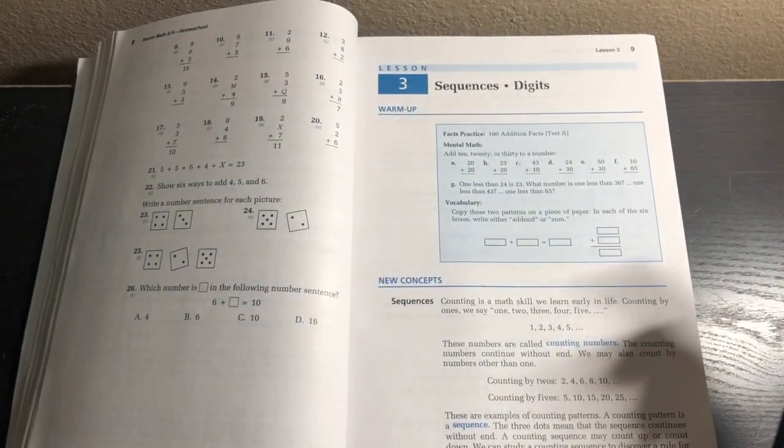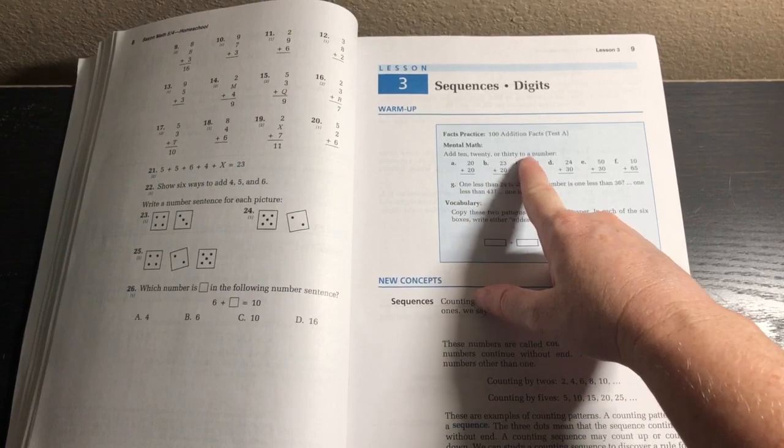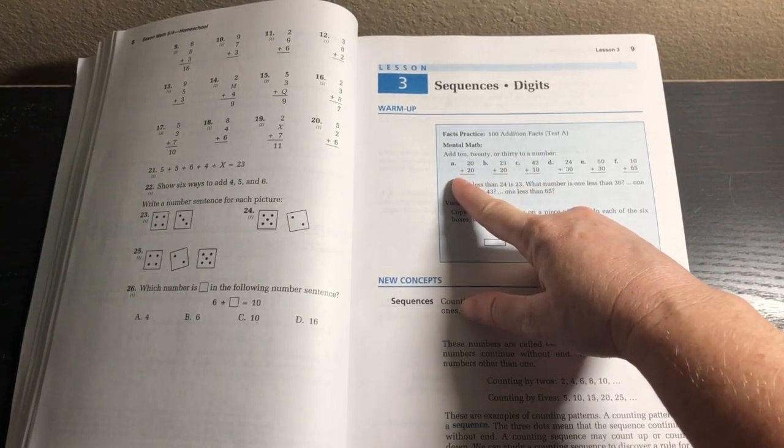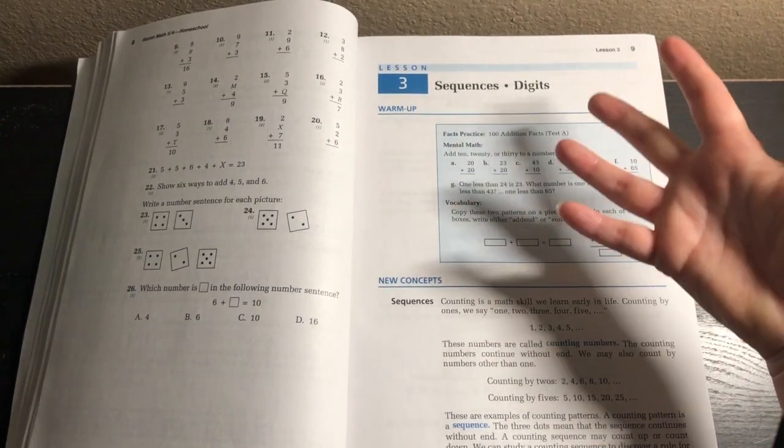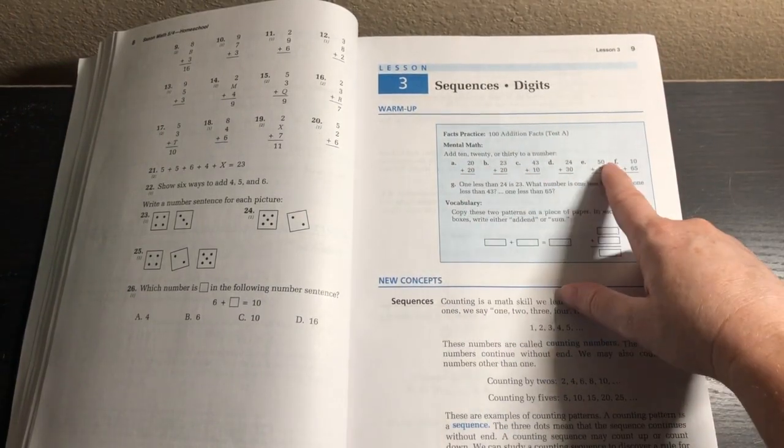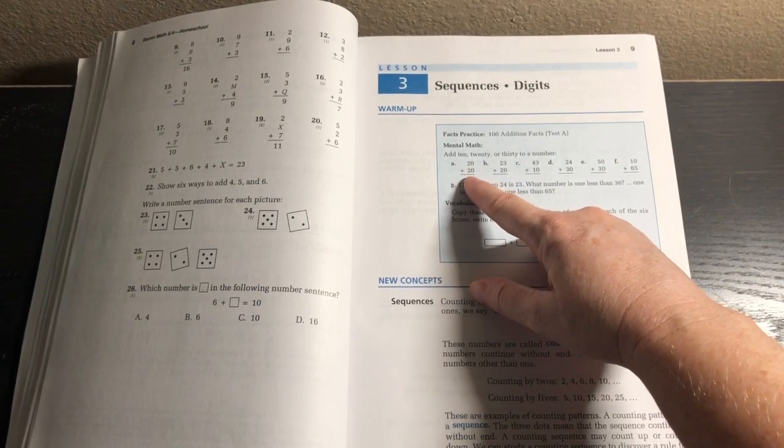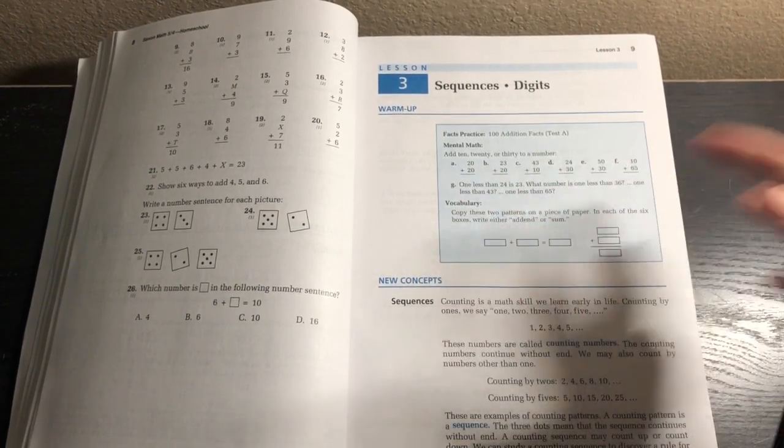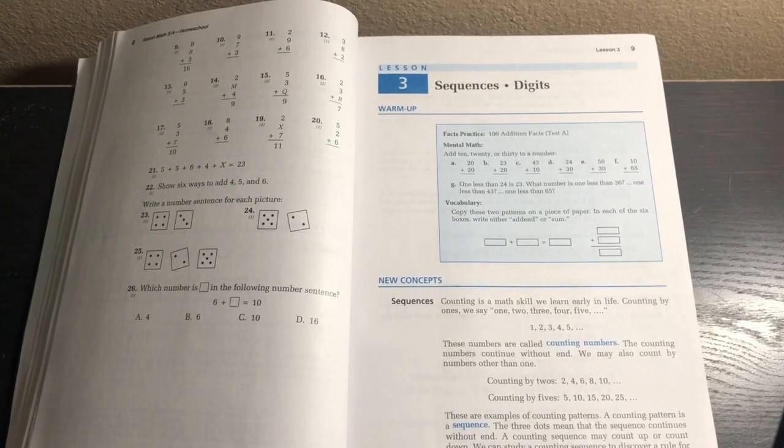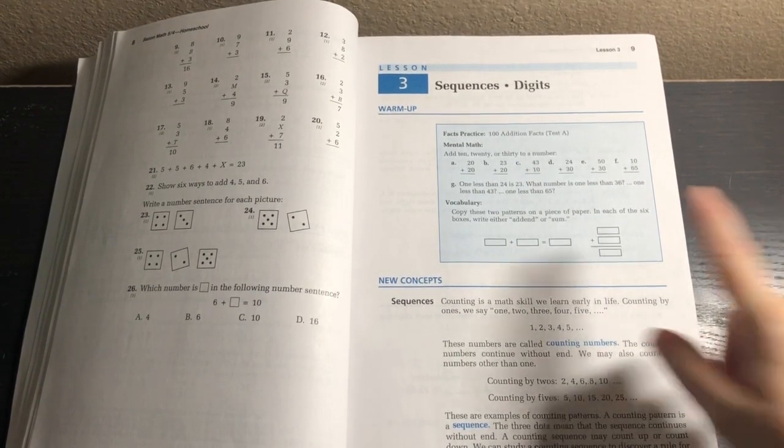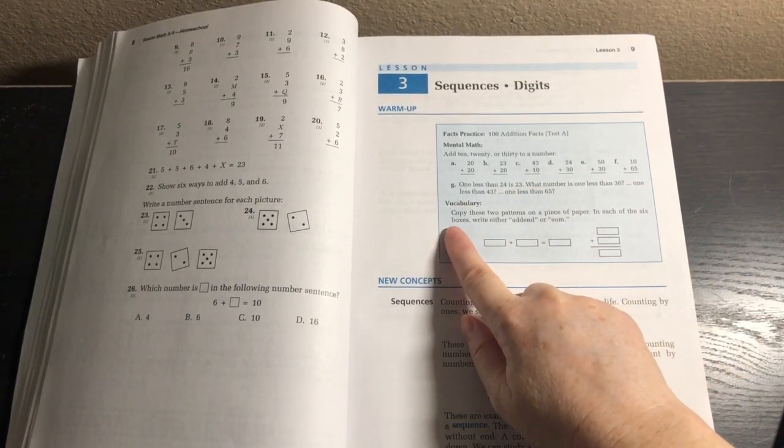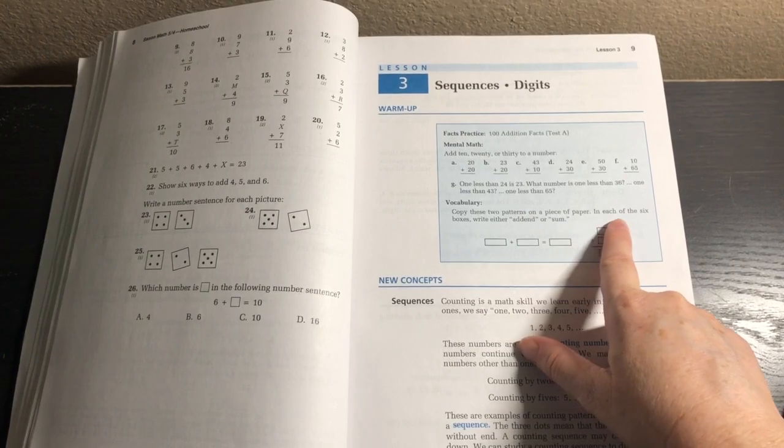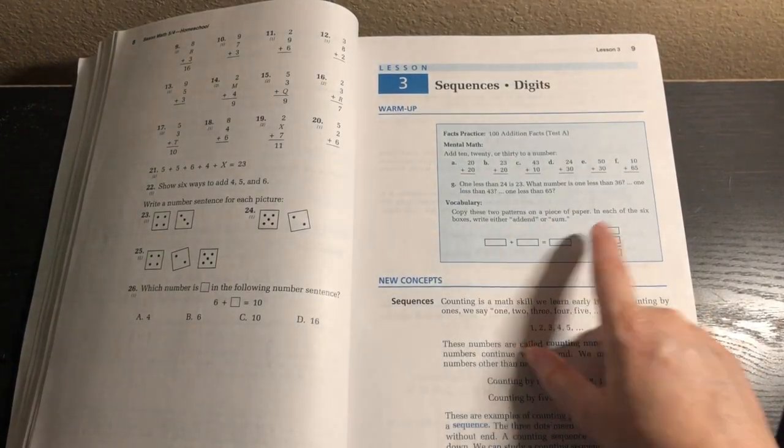Then you're going to do mental math at 10, 20, or 30 to a number. I would have my students answer these with mental math. They would just write on the individual whiteboard. I wouldn't make them write out the problem, they would just need to write out the answer. So I would say 20 plus 20, they write 40 and then show me their whiteboard. Then we have vocabulary - copy these two patterns on a piece of paper and in each of the six boxes write either addend or sum.